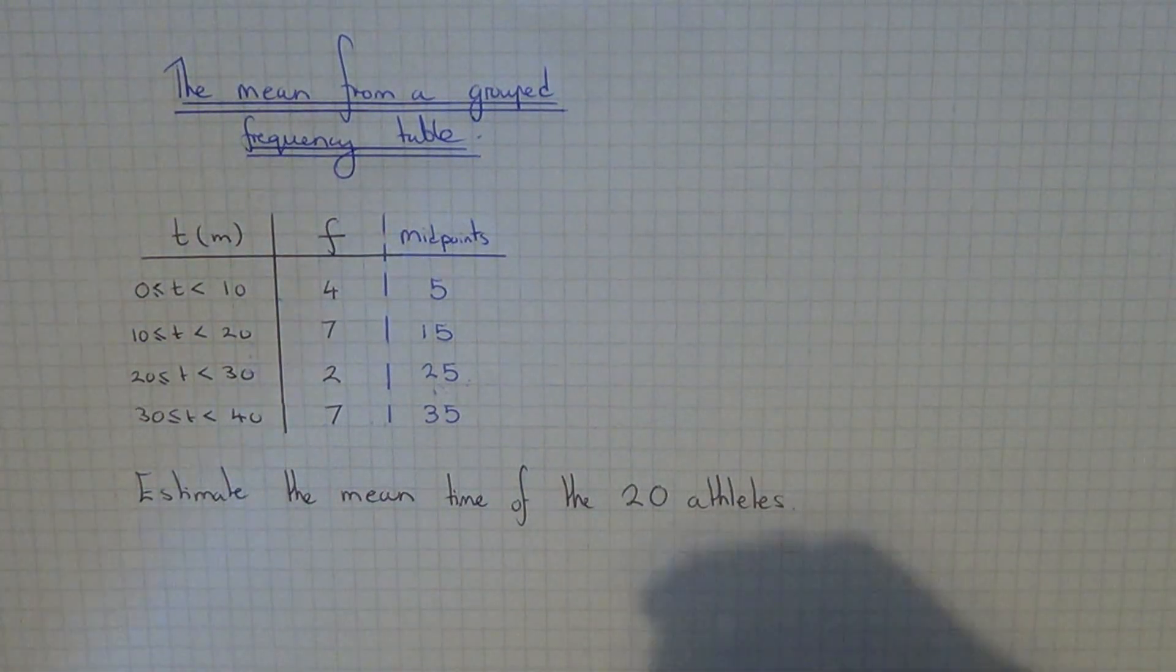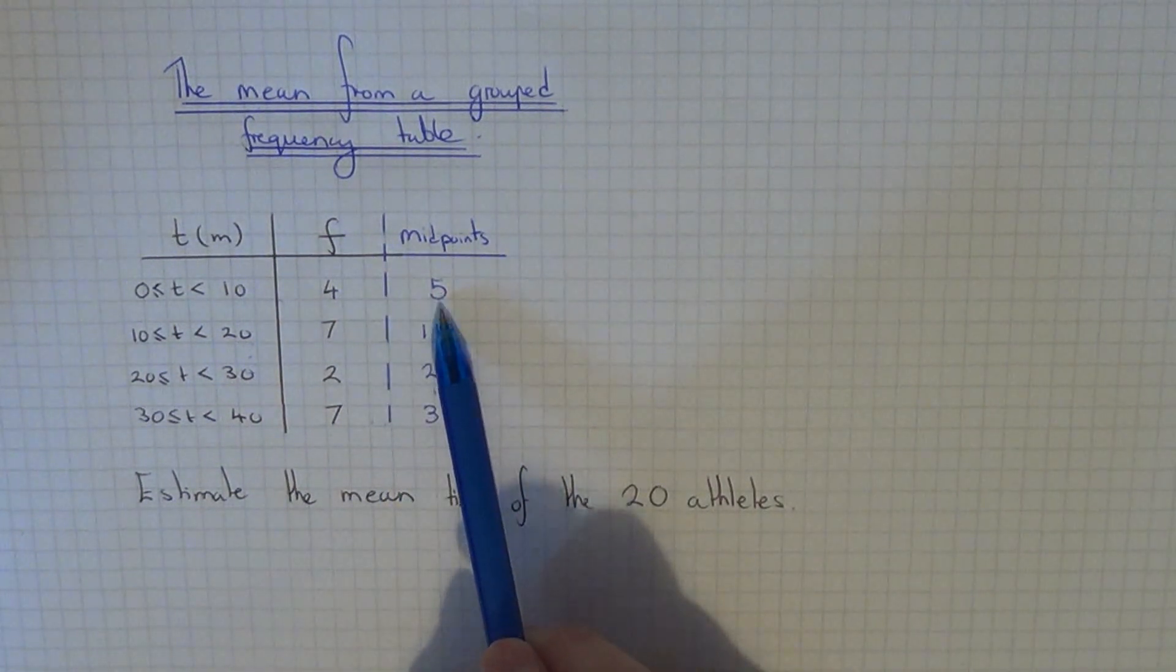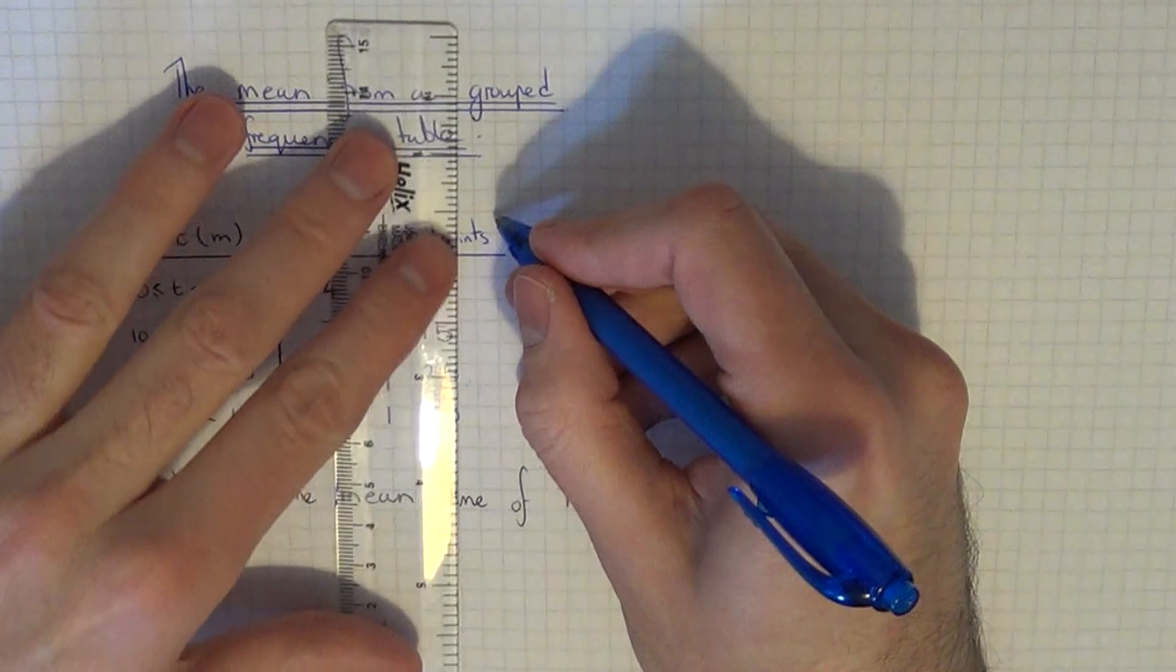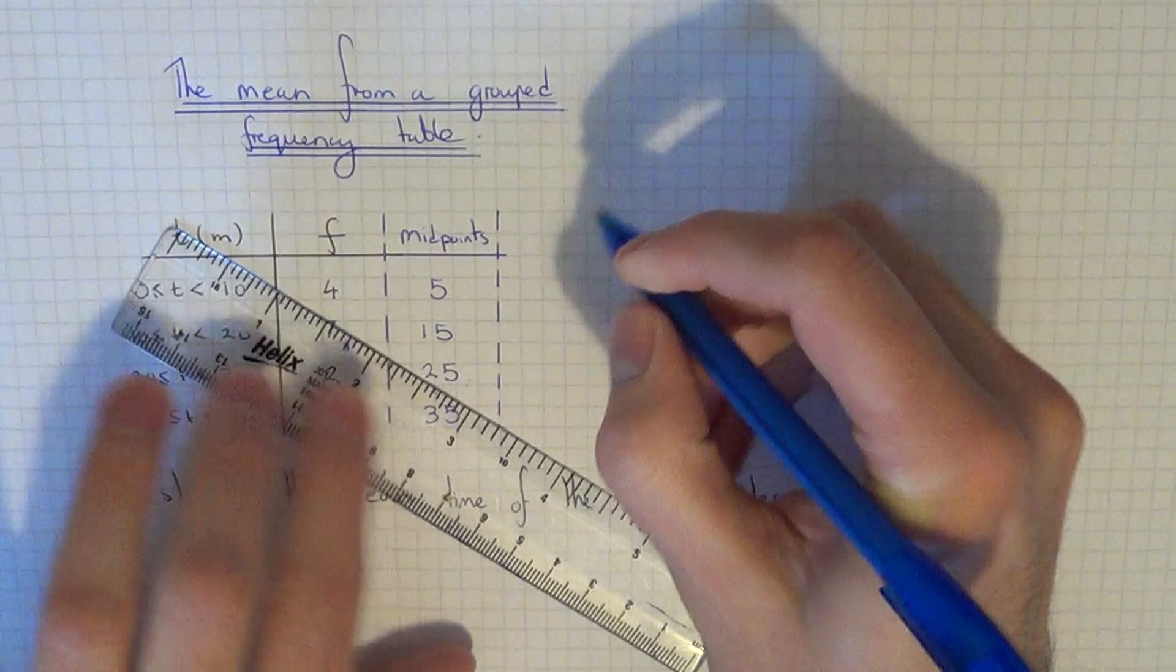The next thing you need to do is multiply the frequency by the midpoints. This will give you the total time of all the 20 athletes which took part in the race.